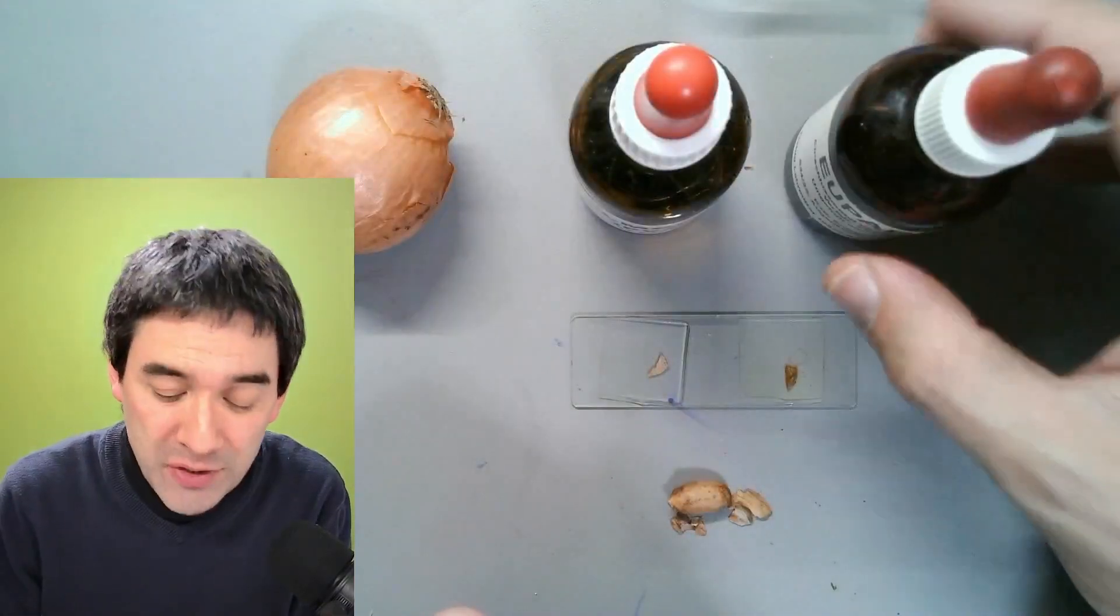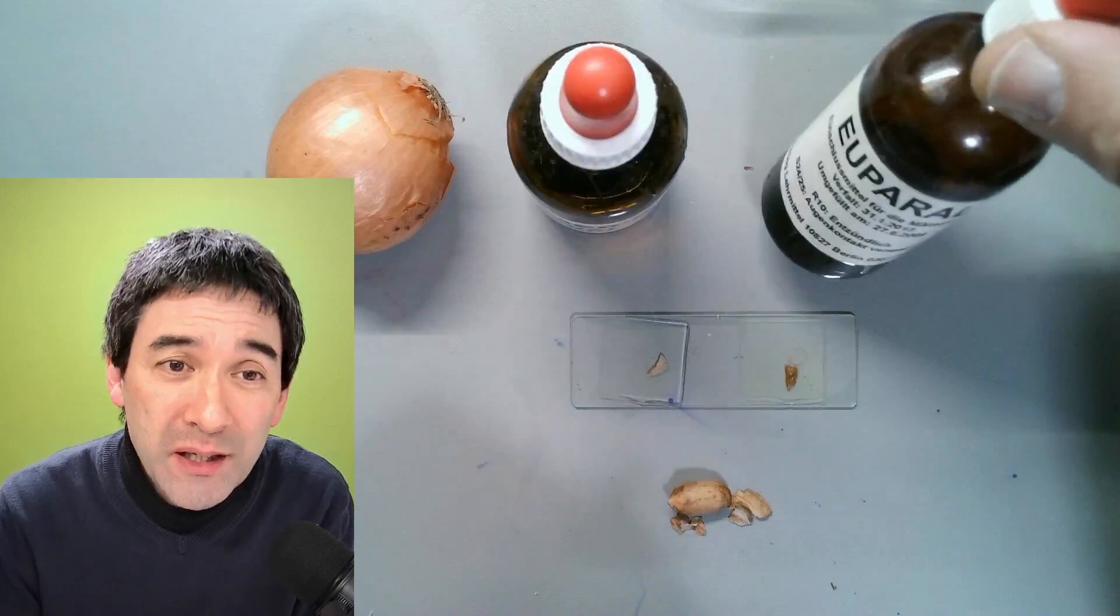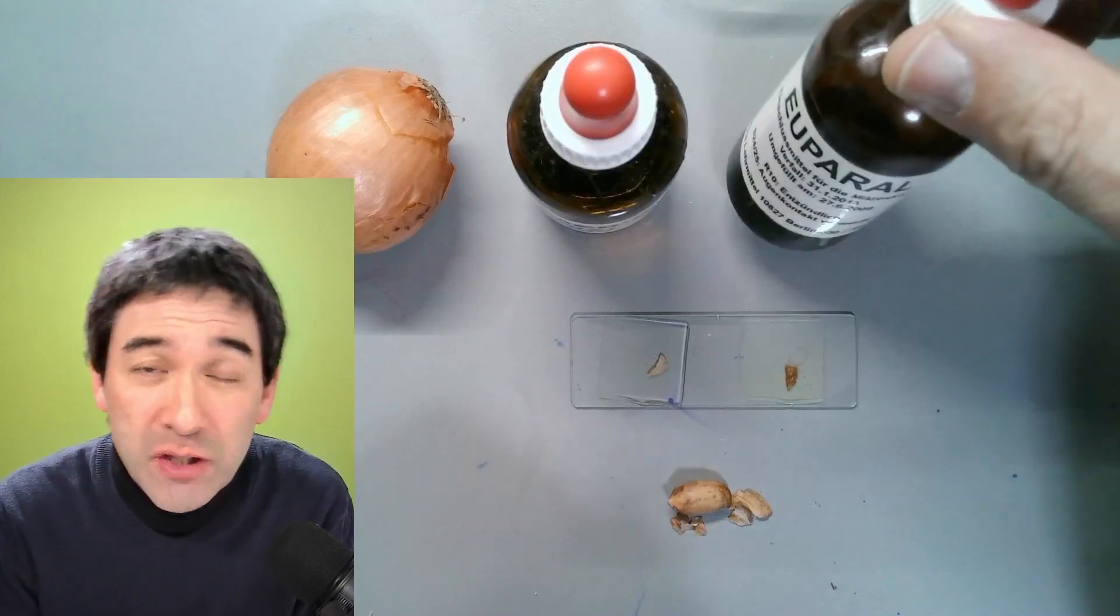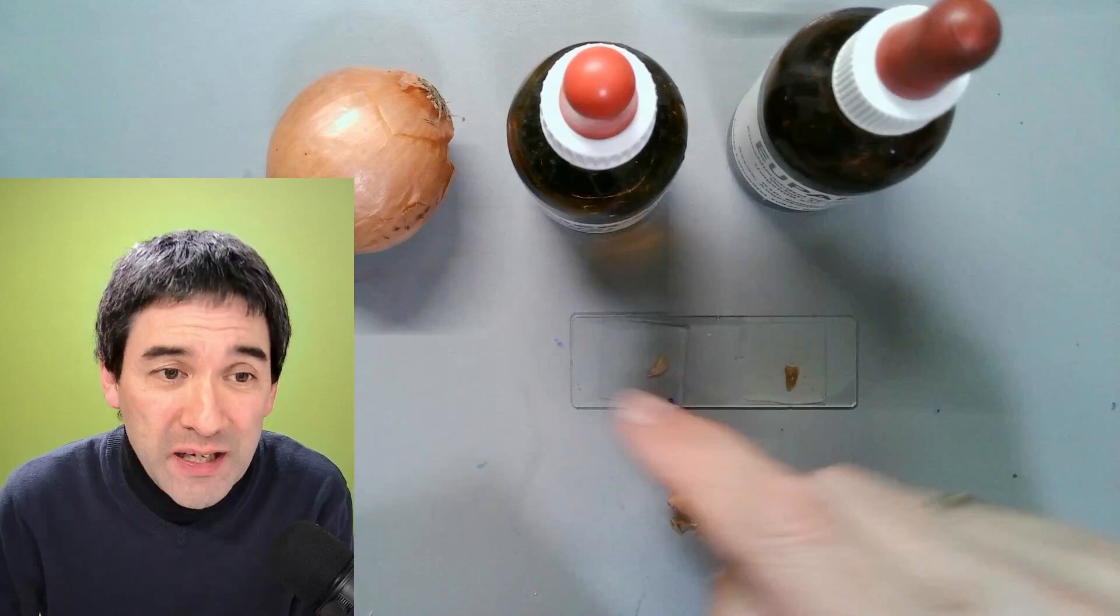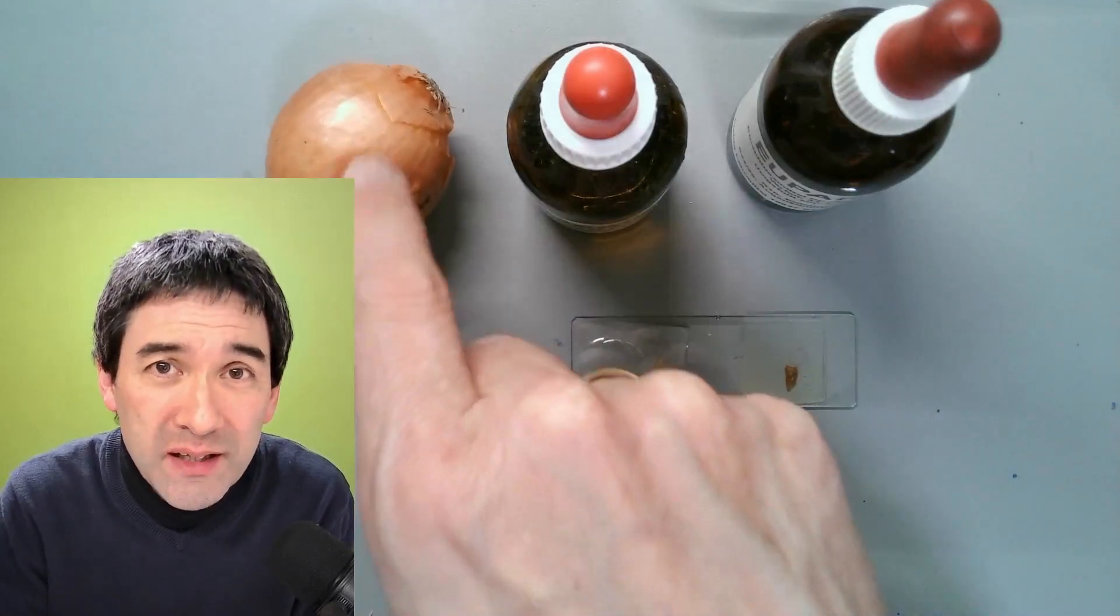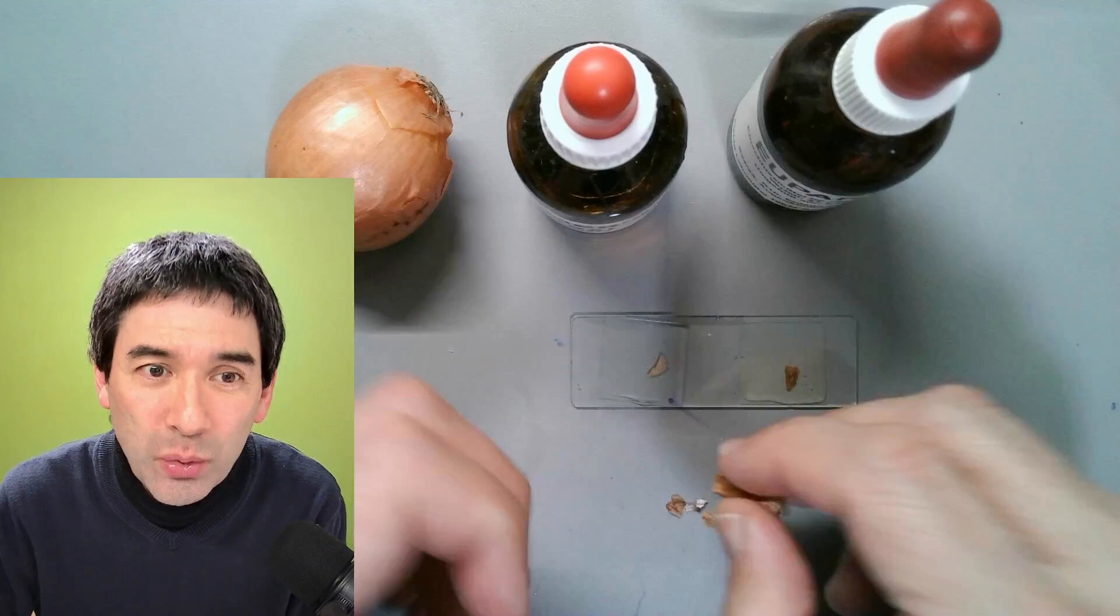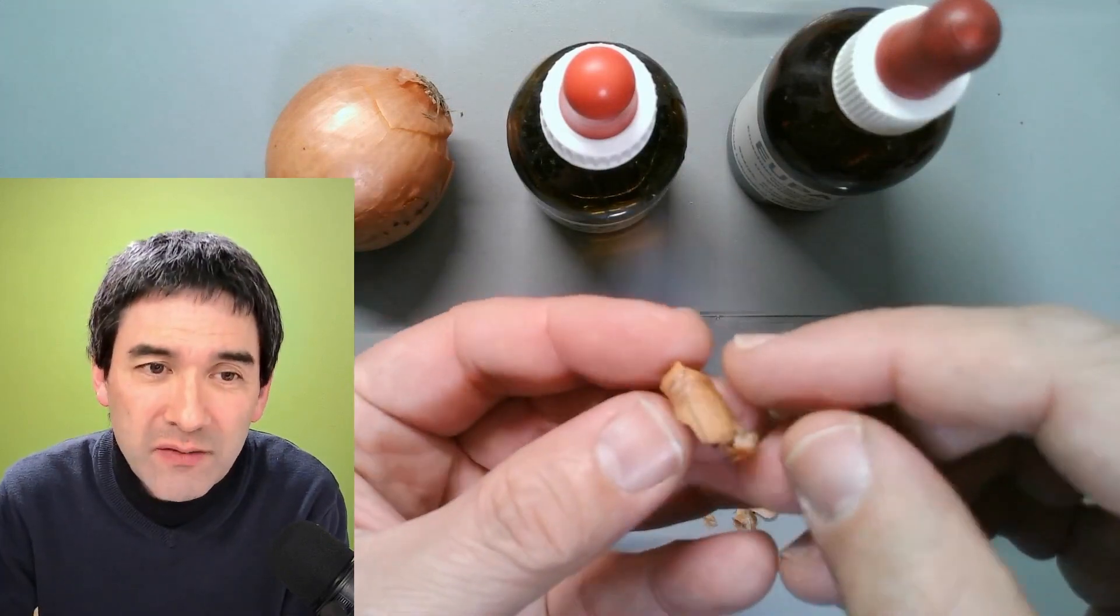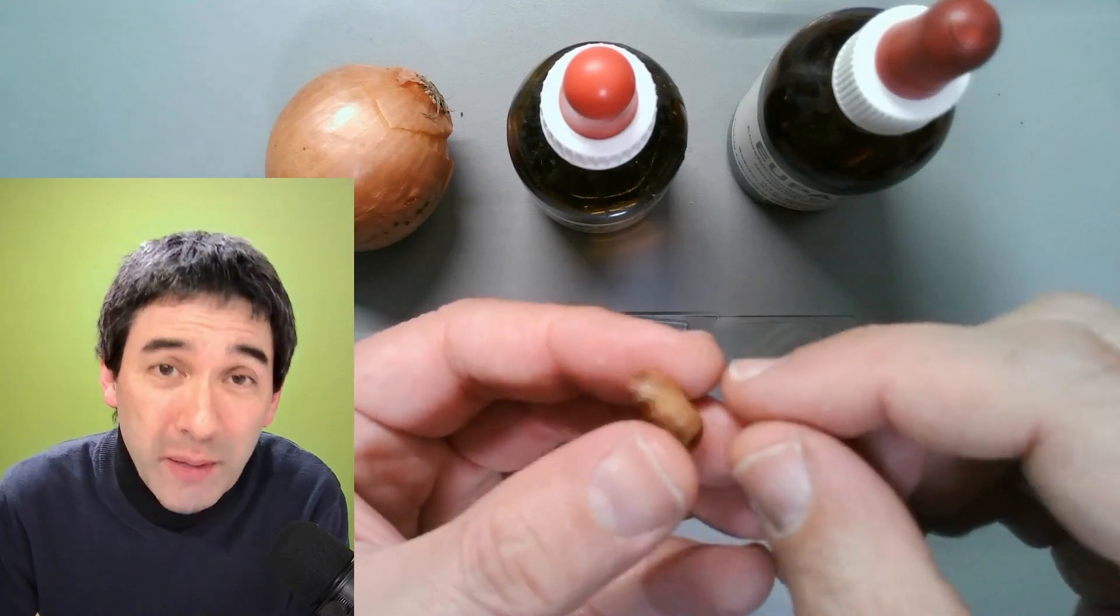So I've got two mounting media here. This one is PVA glue, a water-based mounting medium, and this is Upro mounting medium, which is most commonly used for mounting insects. What I've done today is I did not take onion skin, but rather the seed coat of a peanut. It's very thin and papery and very suitable for observing under the microscope.